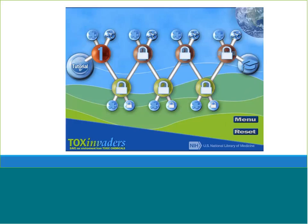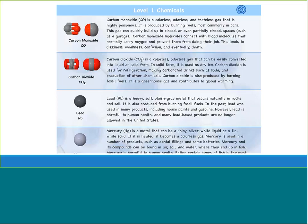If you click on the images of the chemical structures, you will be able to access a list of chemicals that are covered by that level of the game. Here is an example of some of the chemicals covered in level one — they include carbon monoxide, carbon dioxide, lead, mercury, and others. The good chemicals on the list would be highlighted in green, so students would easily be able to tell the difference as they are reading the background information.